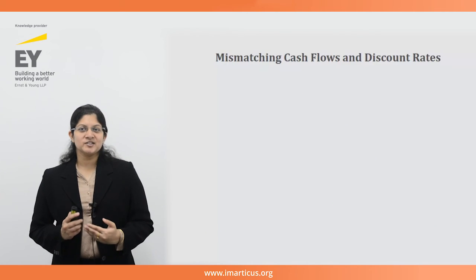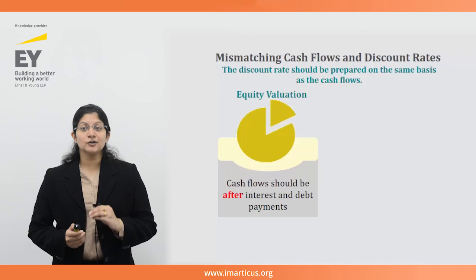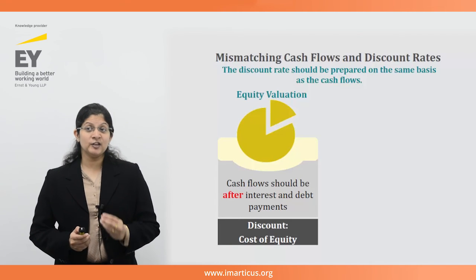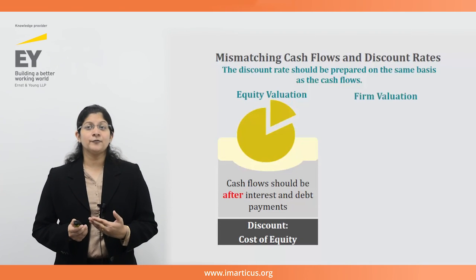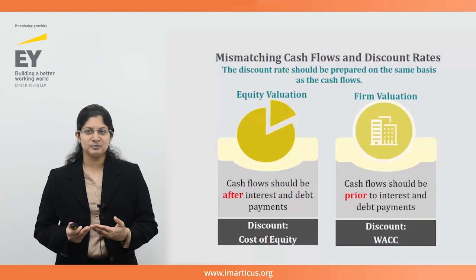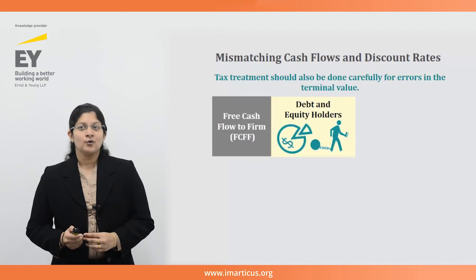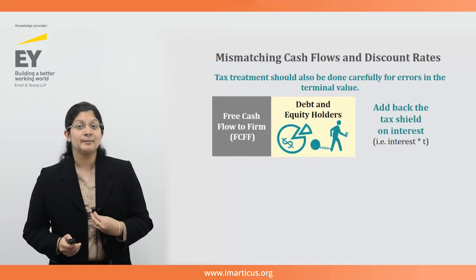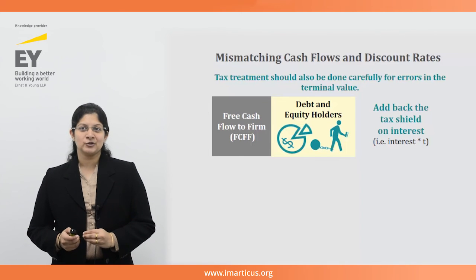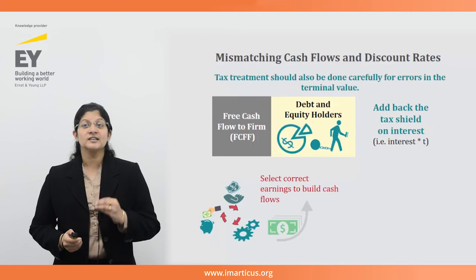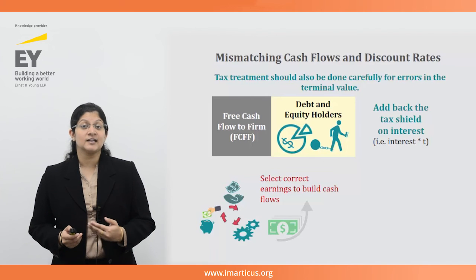Regarding mismatching cash flows and discount rates: one should always be sure that the discount rate is prepared on the same basis as the cash flows. In cases of equity valuation, cash flows should be after interest and debt payments and the cost of equity should be used as the discount rate. For firm valuation, cash flows should be prior to any interest or debt payments and WACC should be used as the discount rate. The tax treatment should be done carefully — when using FCFF for firm valuation, remember to add back the tax shield on interest, since you are starting with EBIT and evaluating cash flows for a company neutral to debt or equity. Also, the correct earnings should be selected — check whether the earnings are real or nominal and consider any inflation impact appropriately. If the cash flows being discounted are nominal, i.e. they reflect expected inflation, the discount rate should also be nominal.